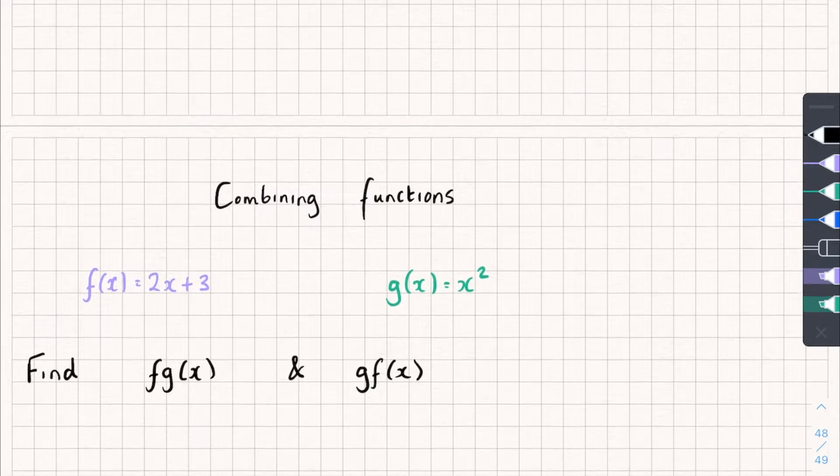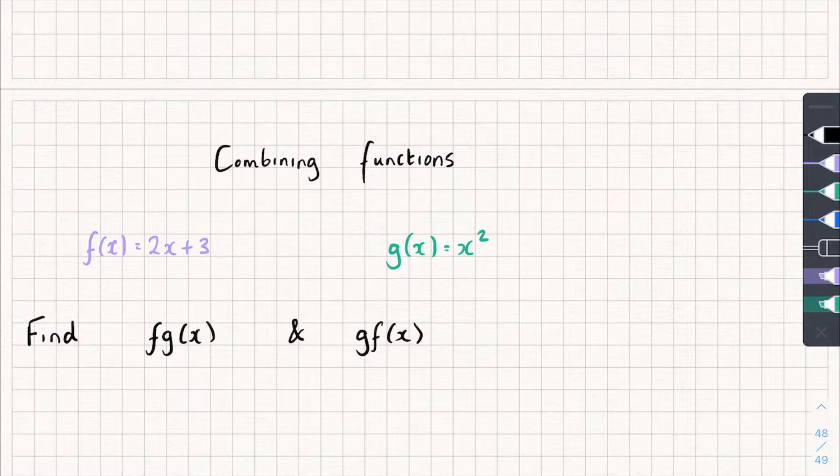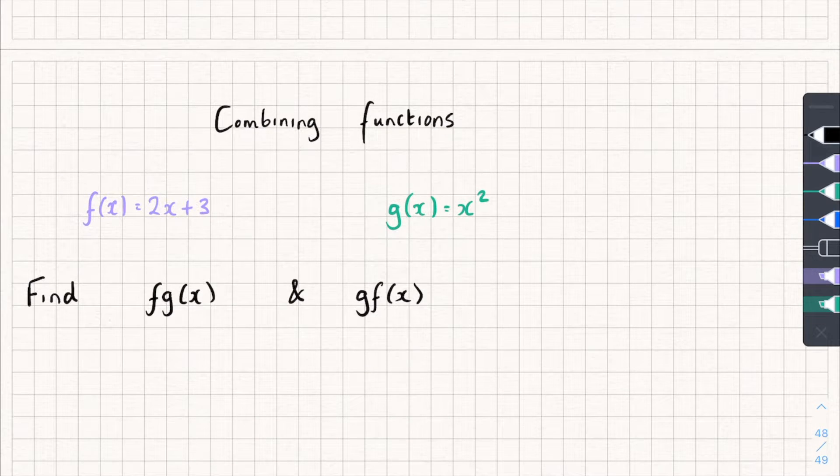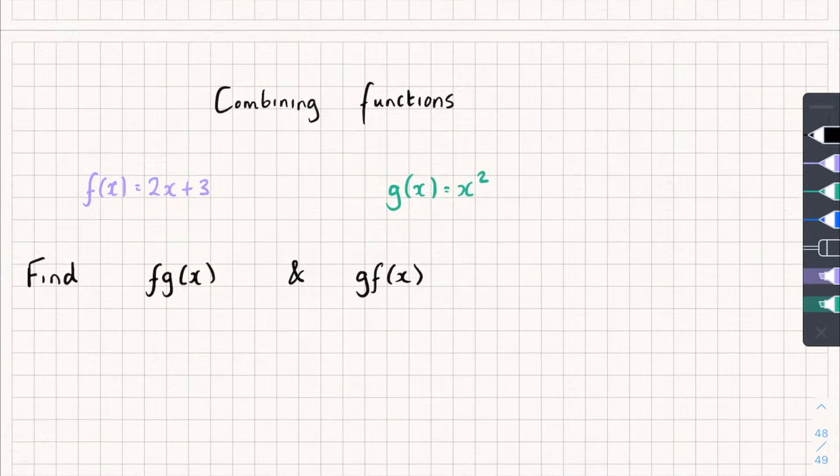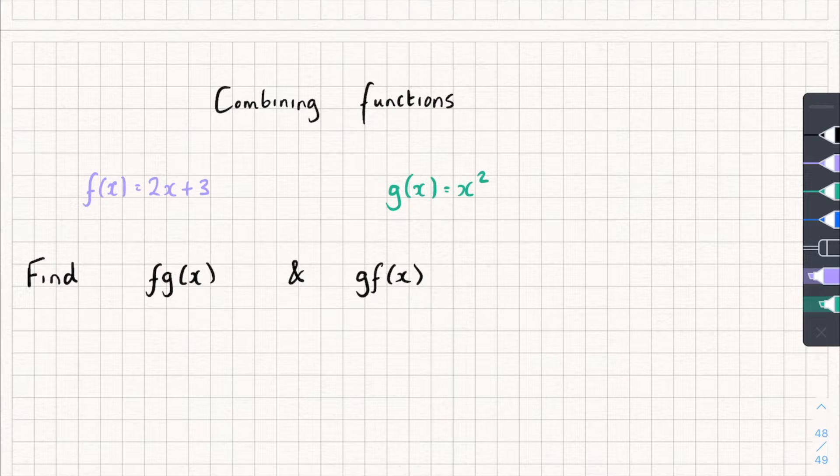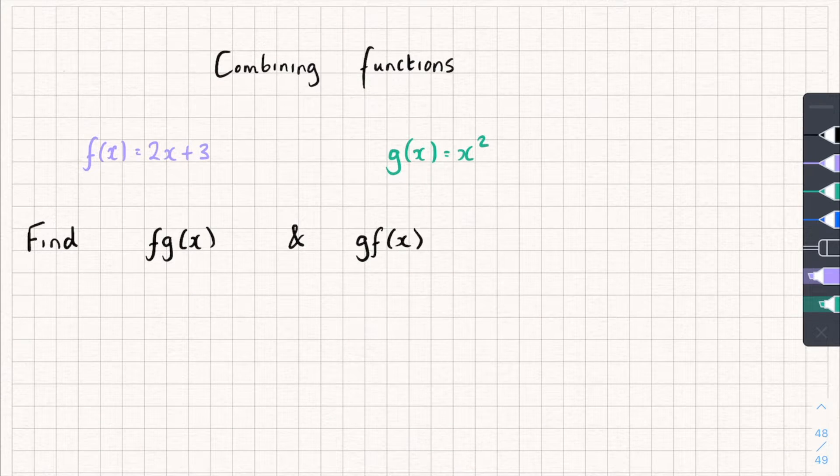Another thing you might have to do is combine functions together into what's called a composite function, which literally just means multiple functions pushed together. So you can see here I've got two functions. I've got f of x equals 2x plus 3, and also g of x, which equals x squared. And we need to find the composite function, or the functions put together, f of g of x and g of f of x. So these are actually quite simple. You just need to do it step by step, and I'll obviously show you how.